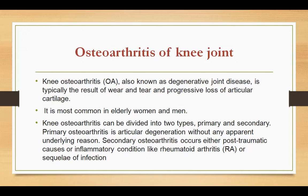The most common condition is osteoarthritis of the knee joint, also known as degenerative joint disease. It typically results from wear and tear and progressive loss of cartilage, most commonly occurring in elderly women and men. Osteoarthritis of the knee is divided into two types: primary and secondary. Primary osteoarthritis occurs due to degenerative conditions, while secondary osteoarthritis occurs through conditions like post-traumatic injury, inflammatory arthritis such as rheumatoid arthritis, or as a sequela of infection.